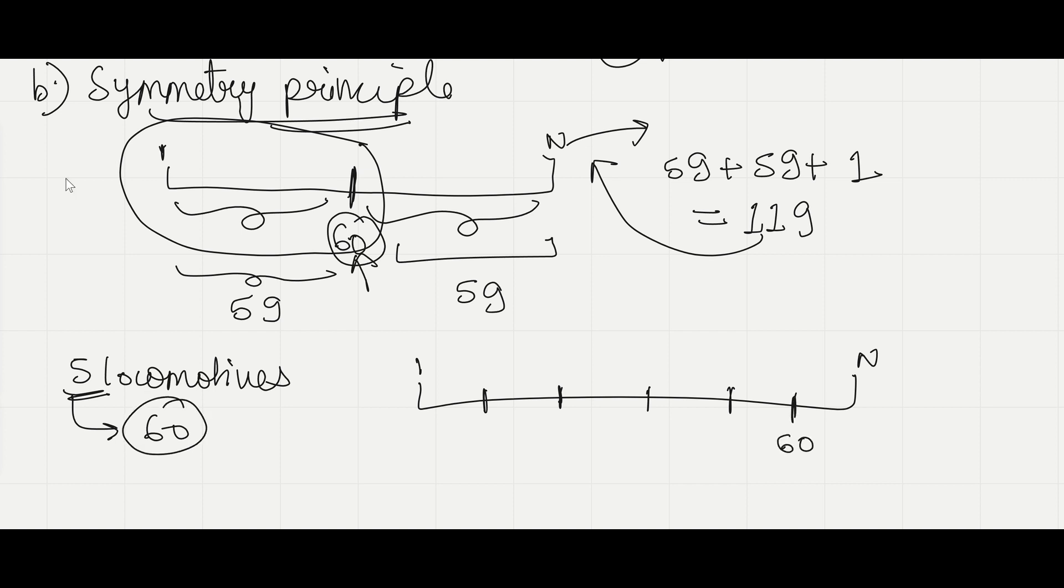So 60 comes over here. So from here till here, we have 60 locomotives. And we have seen 5 locomotives. So 60 minus 5, that is 55. 55 should be divided in these 5 segments equally.